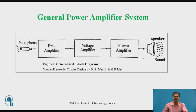The input signal pickup transducer — for example, a microphone — converts one form of energy into electrical energy. It converts sound energy into electrical energy whose output is a very low level voltage signal, which is applied to a preamplifier. The output of the microphone cannot be used to drive the output transducer because its signal level is very low, so it is given to a preamplifier. The preamplifier is a small signal amplifier whose input resistance is very high. It raises the signal voltage level and current level of the signal from the microphone.